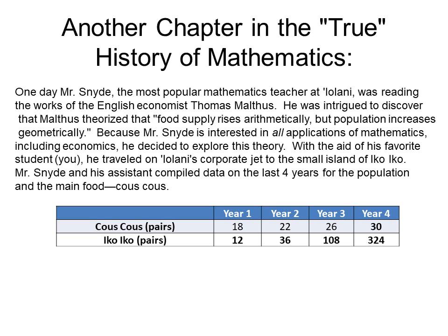You will notice that the couscous increases arithmetically — that means there is a common difference. In this case it is four. And the population increases geometrically, in other words, multiplying by a common factor each time. What is the factor in this case? Three.